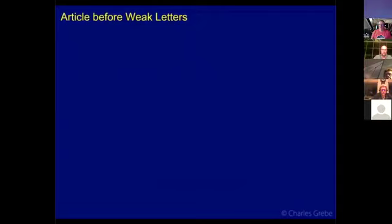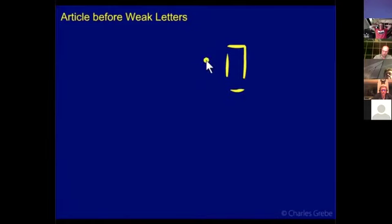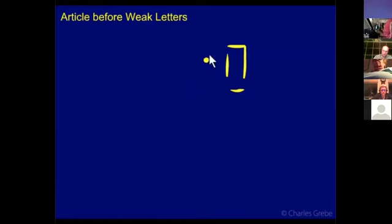Article before weak letters. This module looks at what happens when we attach the article to words that begin with letters that cannot double. Our article has three parts: the consonant He, the vowel Patach, and following that the doubling — or gemination — of the next consonant via Dagesh Forte. But what happens if the first letter of your word can't double? Then other things need to happen.